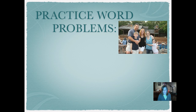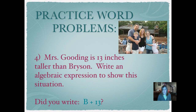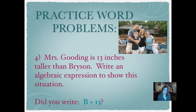Here's a practice word problem: Mrs. Gooding is 13 inches taller than Bryson — Bryson's the short little blonde kid there. Write an algebraic expression to show this situation. Push play when you're ready. Did you write b plus 13? We want to know how tall Mrs. Gooding is. Bryson's height is represented by b, and 13 is how many inches Mrs. Gooding is taller than Bryson. 'Taller' means more than, so we would want to add.